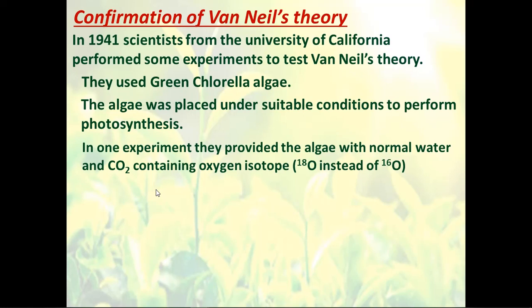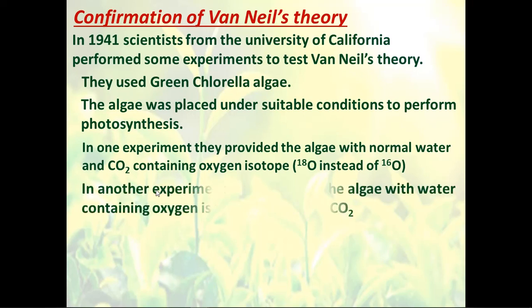Isotopes have the same number of protons and the same number of electrons, but the number of neutrons inside the atom is different. The normal oxygen is O-16, but they used O-18 instead. So in one experiment, they provided the algae with normal water and the oxygen isotope in the carbon dioxide. In the other experiment, they provided the algae with water containing the oxygen isotope and normal carbon dioxide.